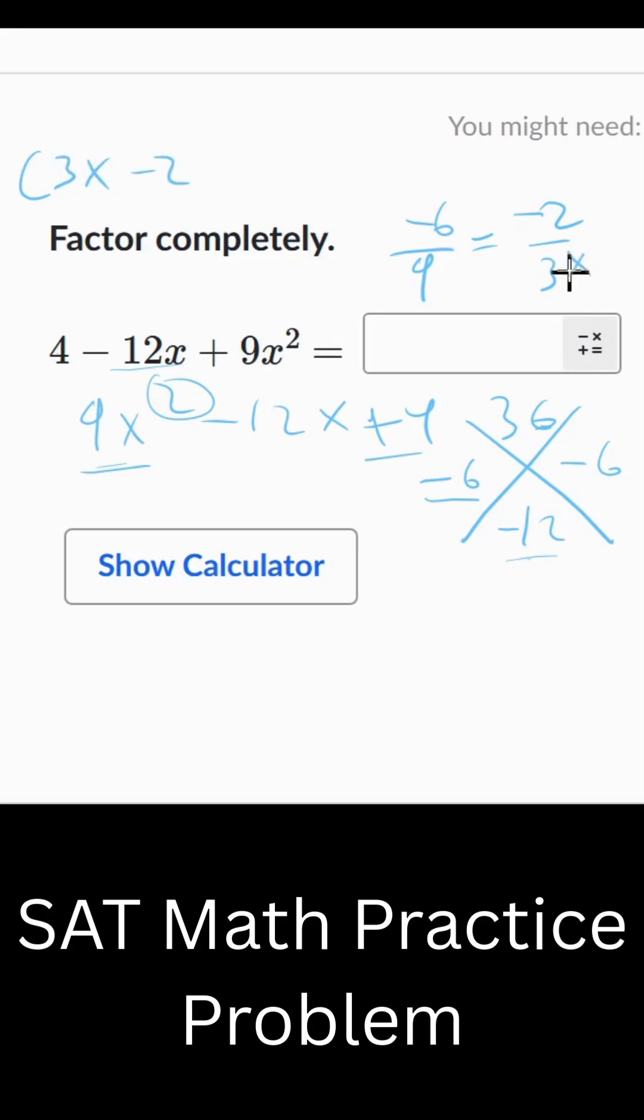So it's 3x minus 2 equals 3x and negative 2, and then you just square it because it's the same thing on both sides.